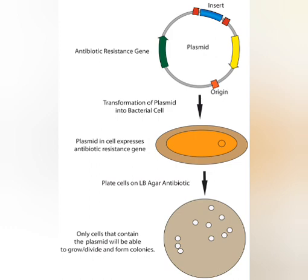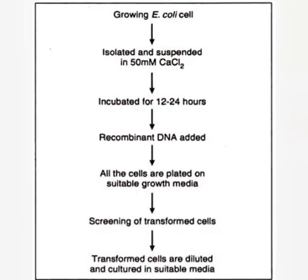Transformation frequency can be further increased by using special strains of E. coli and specific conditions during the transformation. This completes the first method. The second method is transfection.